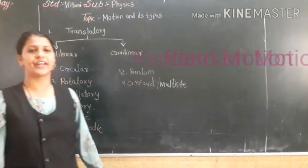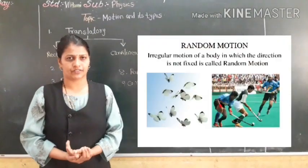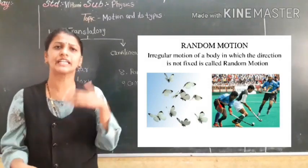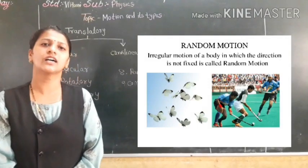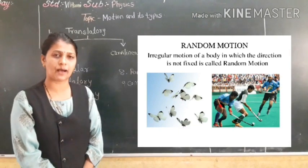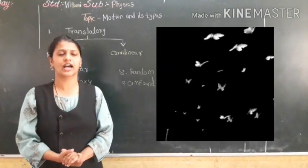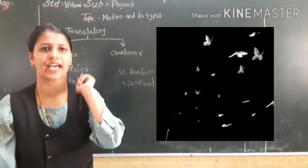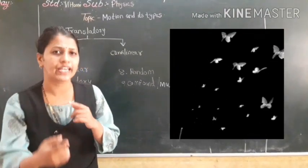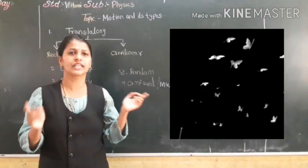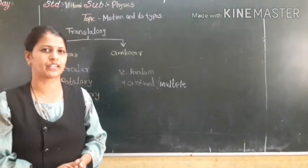Next is random motion. Random motion means the object which moves randomly in any direction. For example, a butterfly flies every time anyhow — we can't tell if it will travel straight, left, or right. Birds also move in any direction. We can't predict which direction they will move.